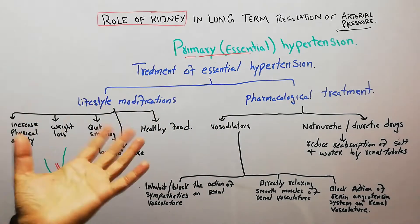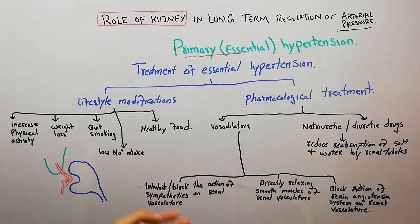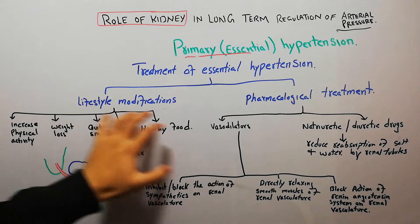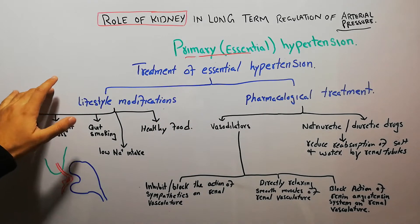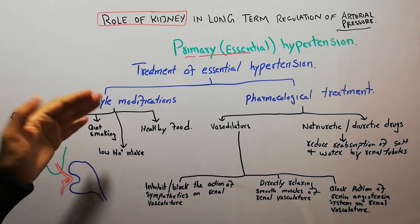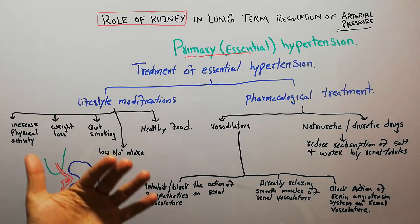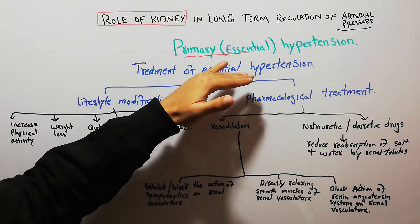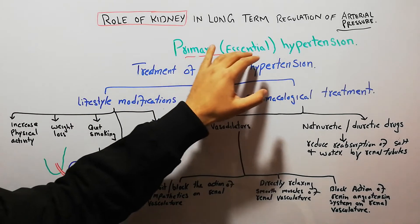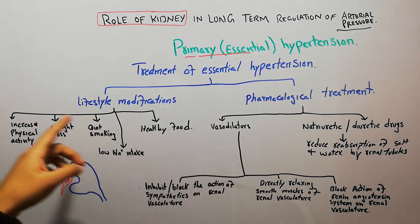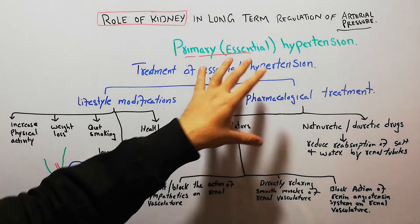The risk factors for primary hypertension basically come from the lifestyle. Decreased physical activity, weight gain, smoking, and junk food basically are risk factors for the development of essential hypertension. The exact cause for primary hypertension is not known, but different risk factors are associated with it.